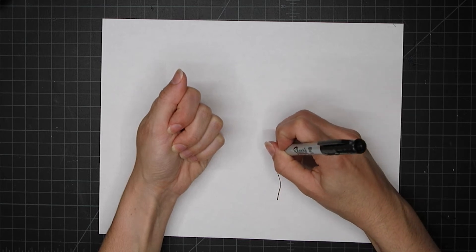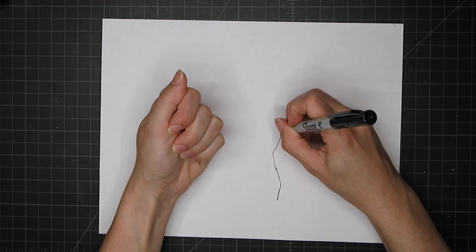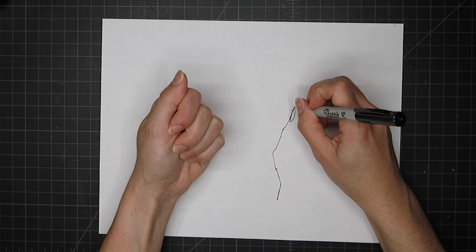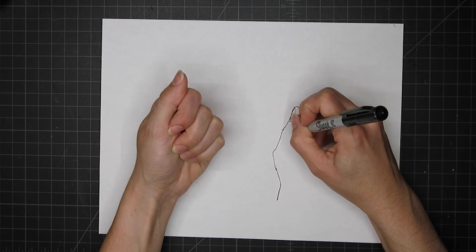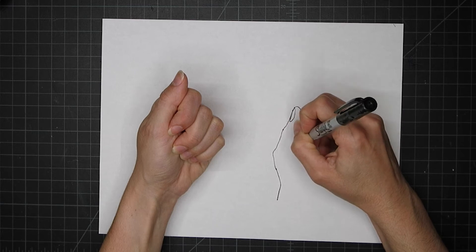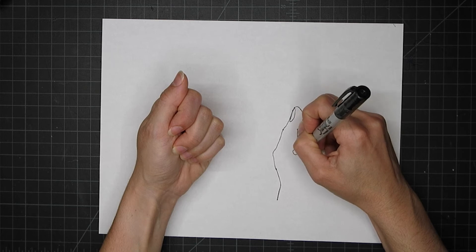Now I'm gonna start at the very bottom towards my wrist and you can see I am just slowly traveling along the form drawing as much of the detail that I can see without lifting my pen.